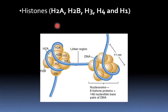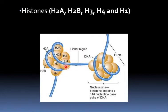Histone molecules are small, positively charged proteins rich in lysine and arginine amino acids, and are present in five types. Four of them — H2A, H2B, H3, and H4 — form the core histones. Two of each form the octamer. The other type, called H1, forms the linker histones.